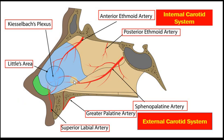The branches from the sphenopalatine artery meet in the anterior inferior portion of the septum. This is called Kiesselbach's plexus and this area is called Little's area. Little's area is the commonest area where anterior nasal bleeding occurs.